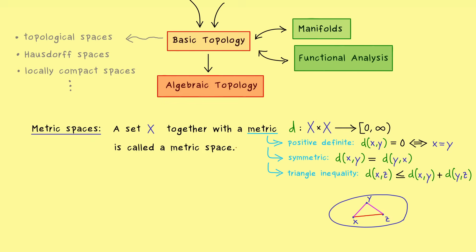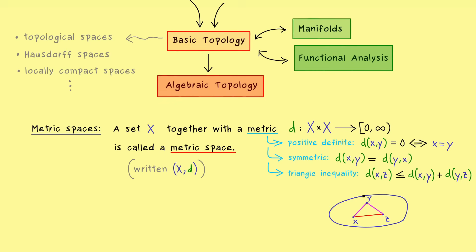This set together with a metric is called a metric space (X, d) — usually written as a pair. In topology we generalize everything we know in metric spaces. Roughly speaking, we will forget about the explicit distance between points and just talk about closeness. This means in a picture everything is much more flexible, because distances can change as we want and it's just about neighborhoods of points.